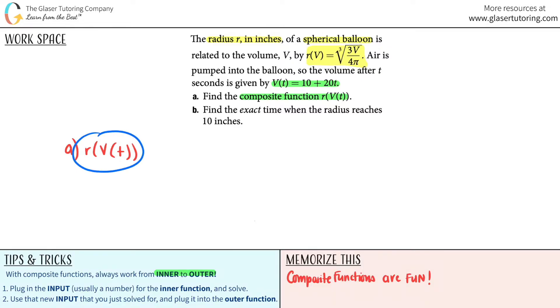There's two functions here. There's the V of t, and that is inside the parentheses, so this is the inner function, and the r function is the outer function.